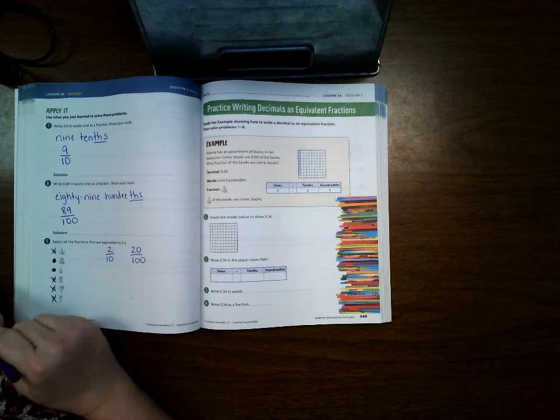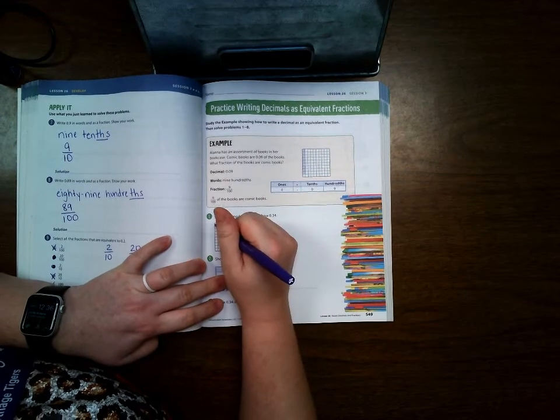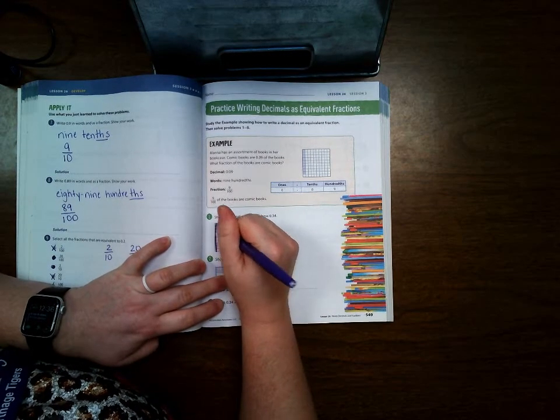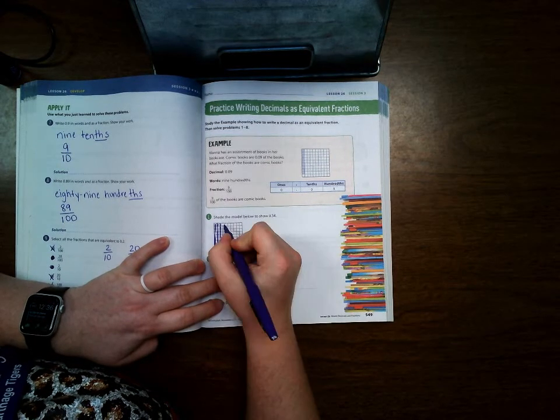Okay, on 549 it says shade 34 hundredths. So that means we're going to shade three rows of 10 and then four blocks.